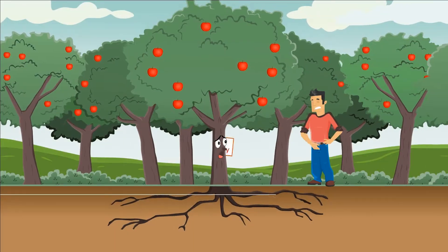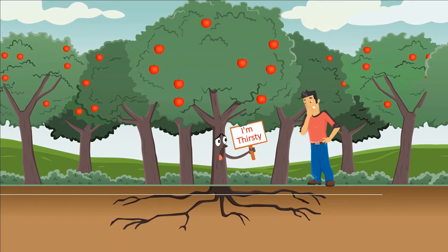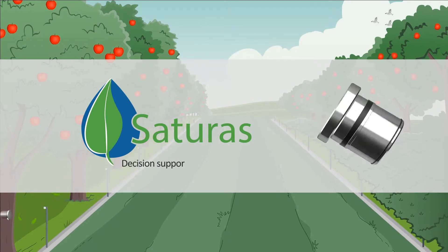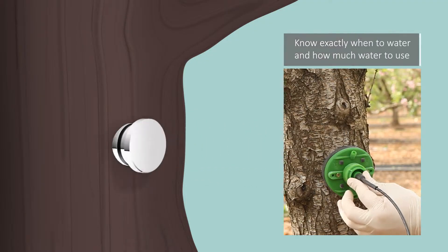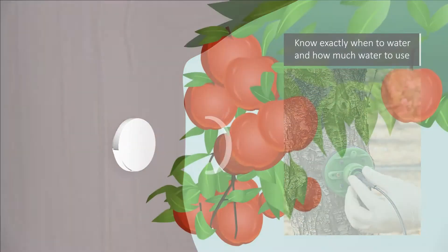Imagine if the tree could tell the farmer when it's thirsty. Saturas introduces the first innovative decision support system for precise irrigation so farmers know exactly when to water and how much water to use.